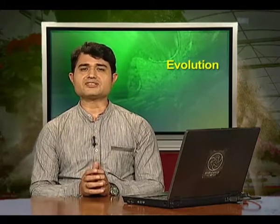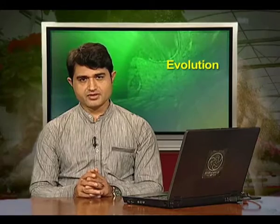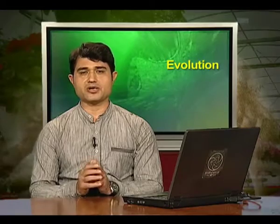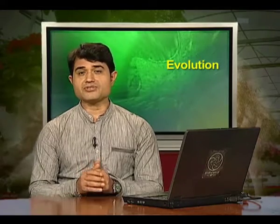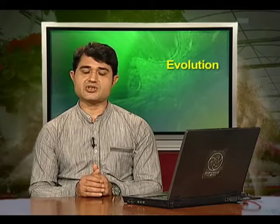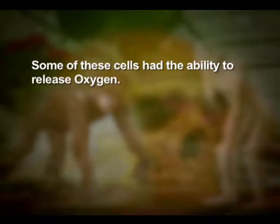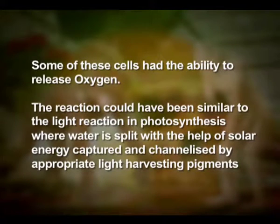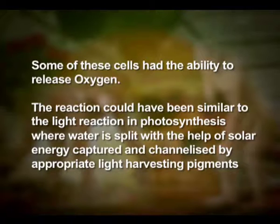About 2000 million years ago, the first cellular forms of life appeared on earth. The mechanism of how non-cellular aggregates of giant macromolecules could evolve into cells with membranous envelopes is not known. Some of these cells had the ability to release oxygen; the reaction could have been similar to the light reaction in photosynthesis, where water is split with the help of solar energy captured by appropriate light-harvesting pigments.